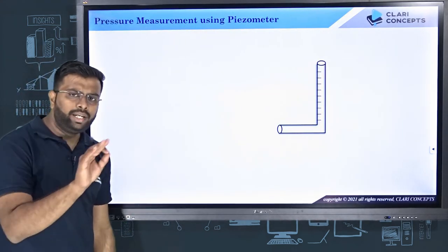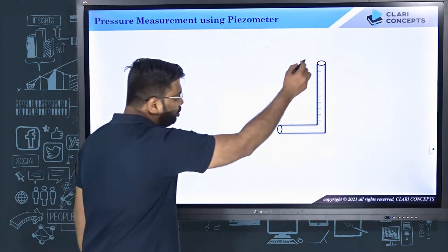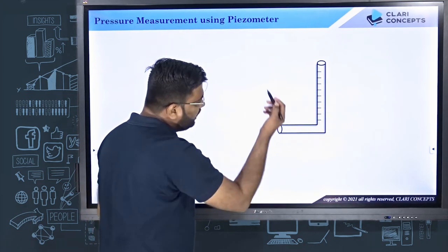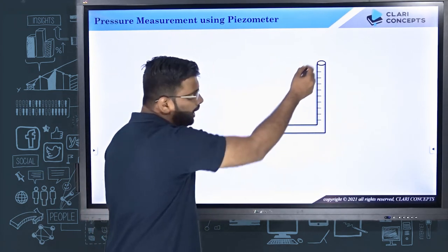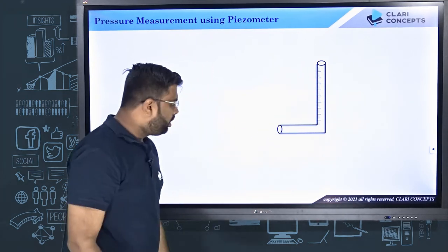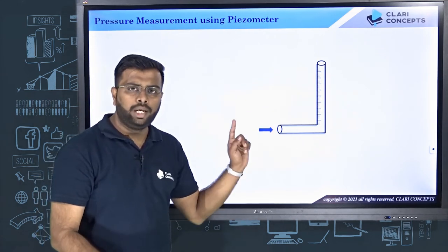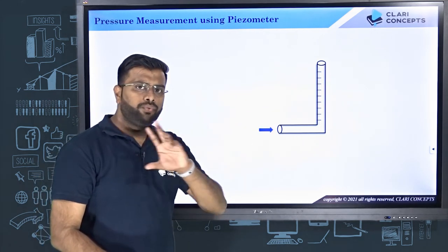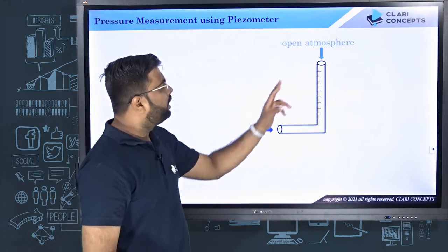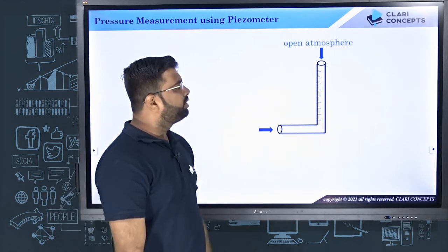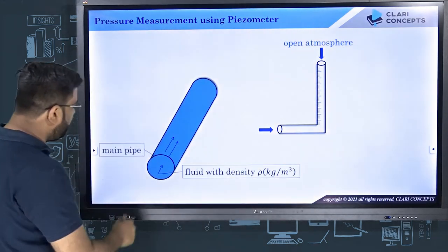A piezometer is simply a glass tube, or any tube in a bent shape, which has two open ends. One end is connected to the pipe where fluid pressure is to be measured, and the other end of the tube is kept open to atmosphere.